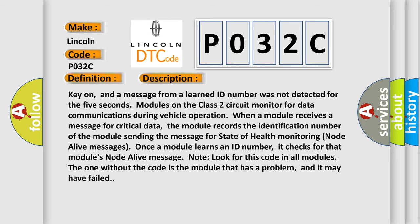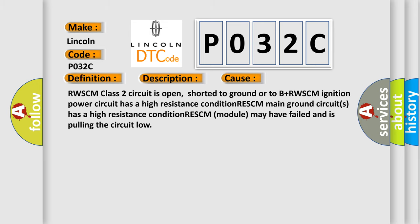This diagnostic error occurs most often in these cases: RWSCM Class 2 circuit is open, shorted to ground or to B+. RWSCM ignition power circuit has a high resistance condition. RWSCM main ground circuits have a high resistance condition. RWSCM module may have failed and is pulling the circuit low.